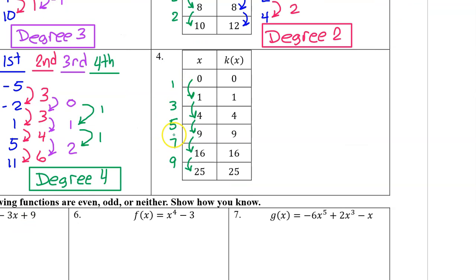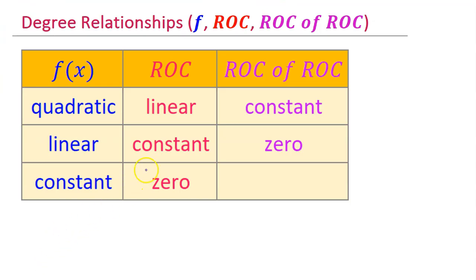On number 4, the input values do not show a common difference, so we can't use the trick. We need to go by the actual rate of change, or perhaps the rate of change of the rate of change. Here's a chart: if the rate of change is constant, then the function is linear, meaning degree 1. If the rate of change of the rate of change is constant, then the original function is quadratic, meaning degree 2.